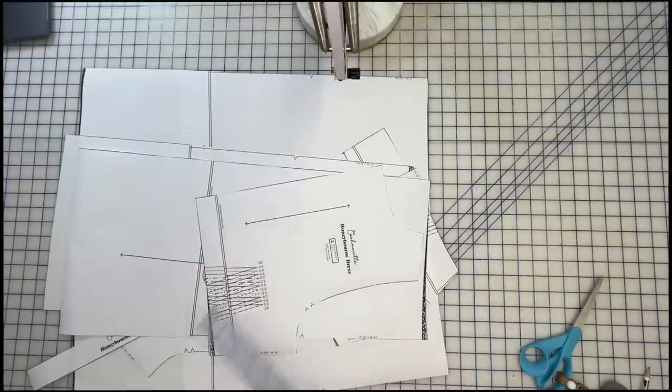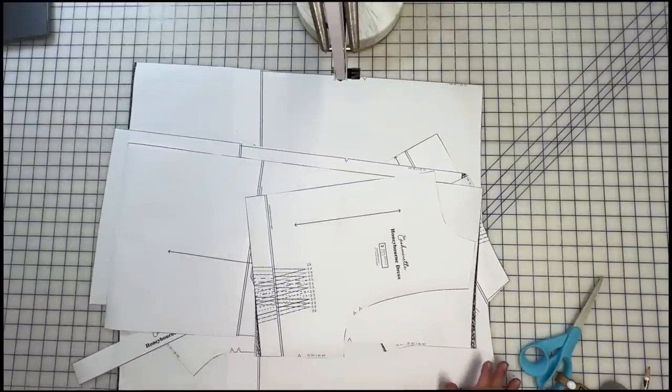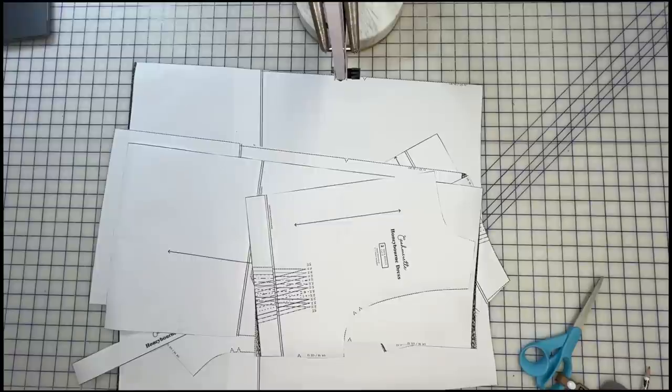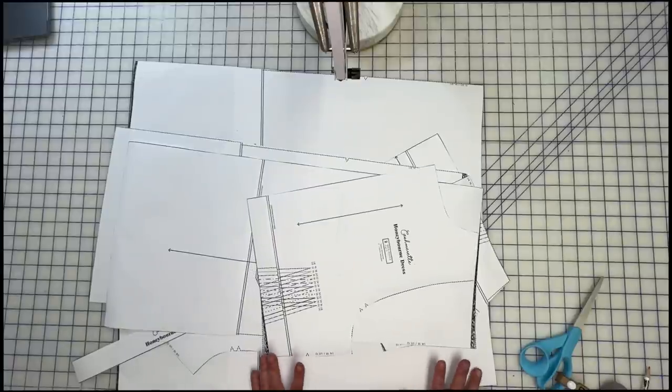Today we are conquering the Honeyburn dress from the Cashmerette Ahead of the Curve book. I have found the digital files that you can print out, so I've done that. I had to actually send them to the copy shop because it was kind of a lot to print out at home. So I sent them off to the copy shop, and they've arrived, and now we've got them here.